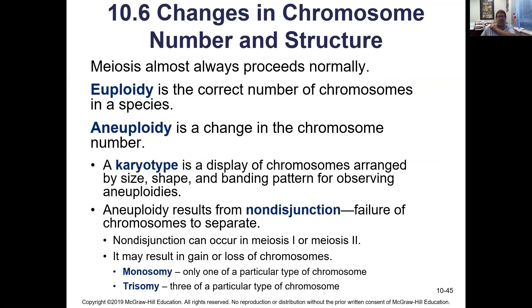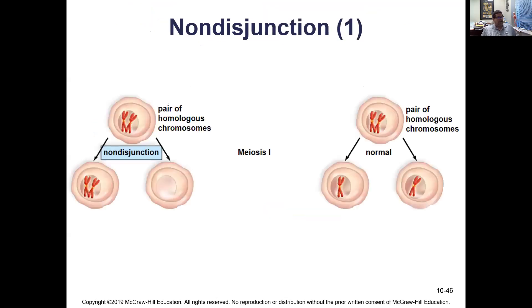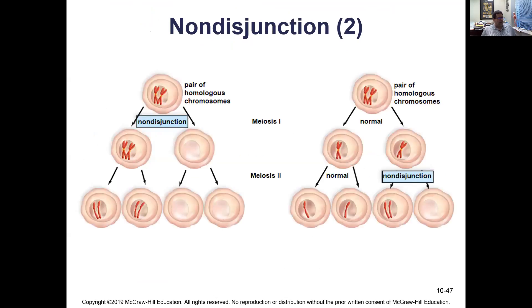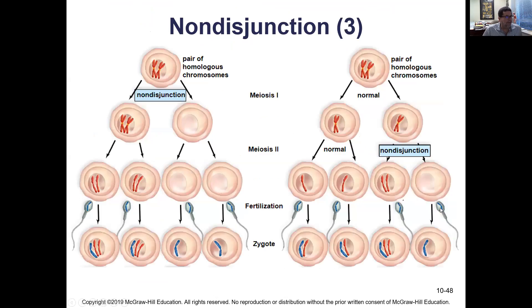Euploidy means you have the correct chromosome number; aneuploidy means you have an incorrect chromosome number. This happens when chromosomes fail to separate during anaphase I or anaphase II — called non-disjunction, or failure of chromosomes to separate. This can lead to a sperm or egg having trisomy (one extra chromosome, giving 24 instead of 23) or monosomy (one chromosome missing). If non-disjunction occurs in meiosis I, all resulting cells are affected; if in meiosis II, two normal and two abnormal cells result.